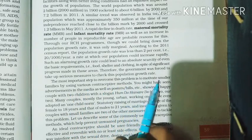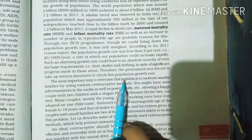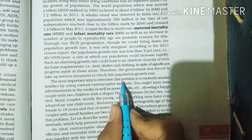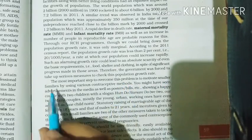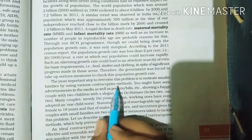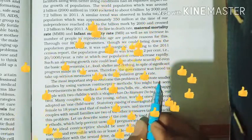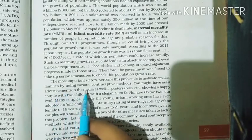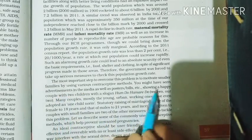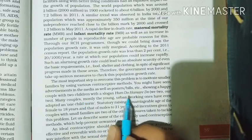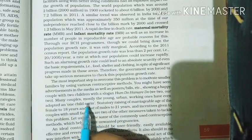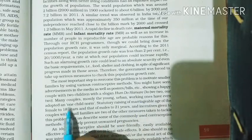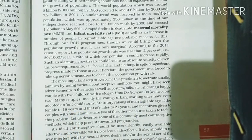The most important step to overcome this problem is to motivate smaller families using contraceptive methods. जैसे media, posters, या bills पर एक happy couple with two children दिखाया जाता है और उनका slogan होता है 'हम दो हमारे दो'। Young couples, urban areas से, या working ones, mostly one child norm को adopt करते हैं।